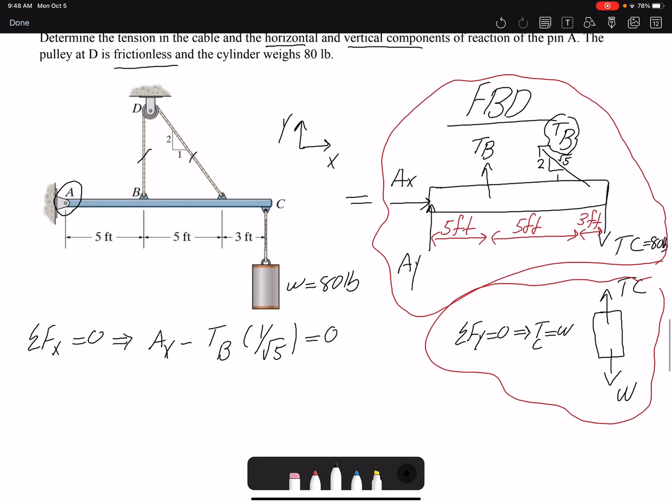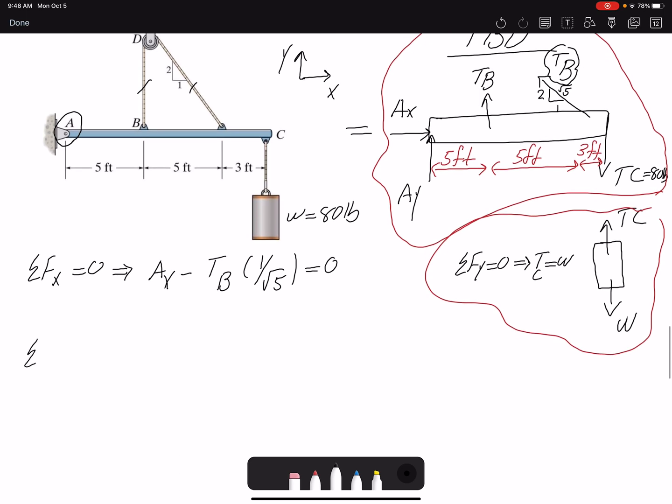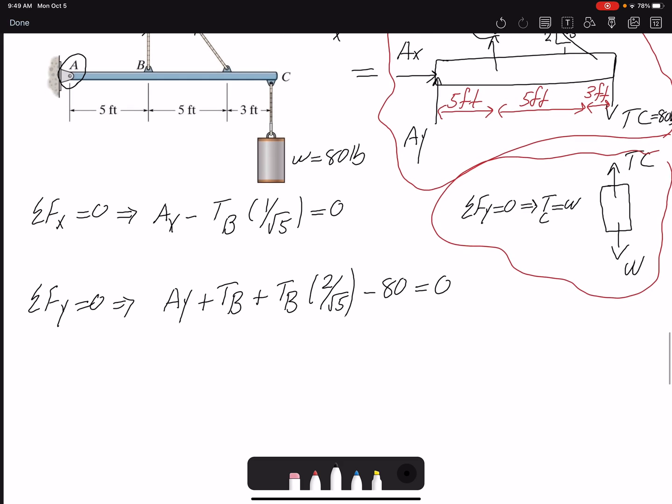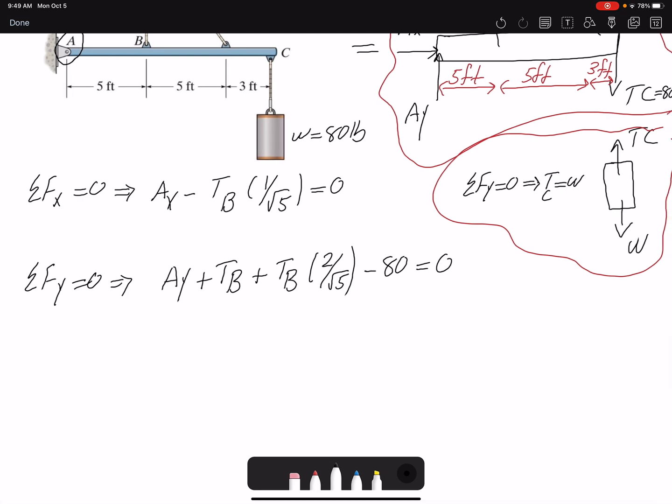I have two unknowns here that I can't solve yet. Summation of forces in y equals zero: I have Ay plus TB, plus this TB vertical component, which would be TB times 2 over square root of 5, and I have negative 80 equals zero. So here I have two unknowns as well. I'm going to go with my moment equation.